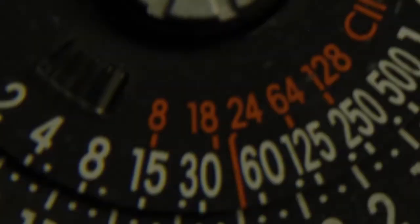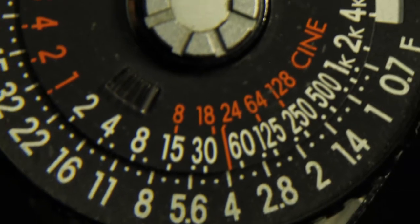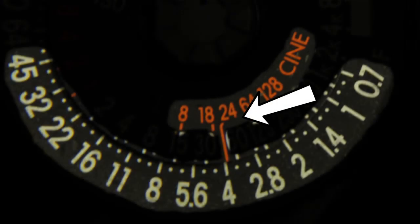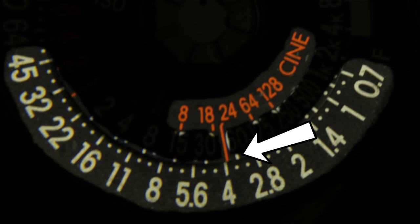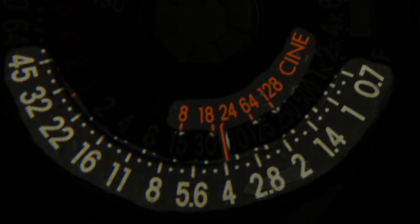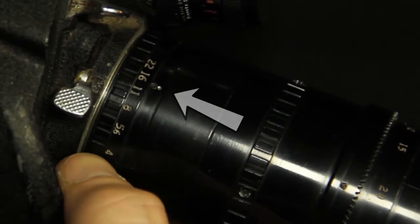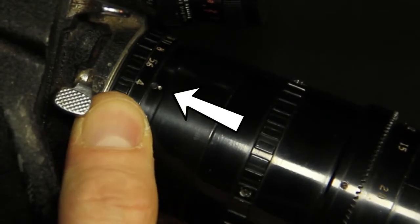You are going to be using this meter for motion picture so refer to the orange numbers near the center of the dial next to the word CINE. These represent cinema camera frame rates. The aperture number on the outer dial that is directly below the frame rate number is the proper f-stop for that frame rate. Now set the f-stop on your lens and you are ready to shoot.